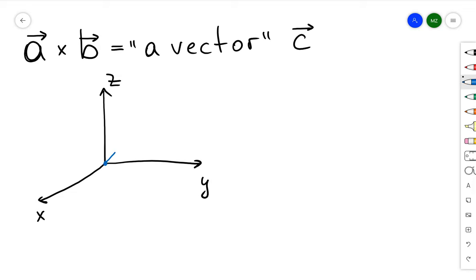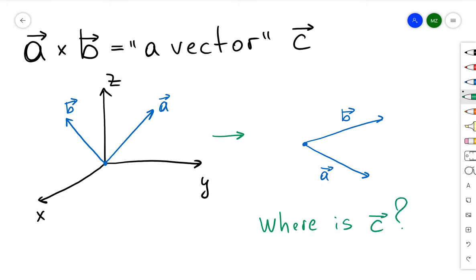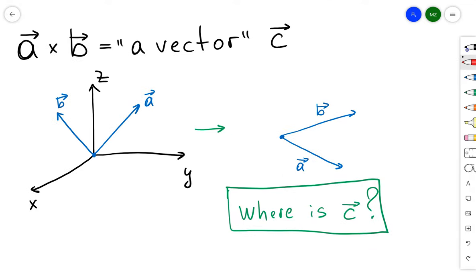If you want to use a cross product, we need to think about vectors in R3, not R2. So I'm going to introduce a three-dimensional coordinate system X, Y, Z, and choose any two random vectors A and B. I will rotate my vectors so that A and B belong to the same plane, and then the question is: where is vector C, the cross product of those two vectors?